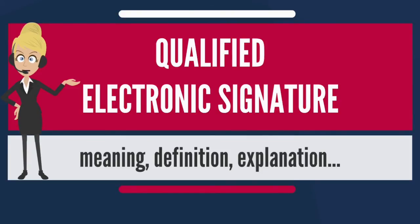Qualified Trust Service Providers are required to abide by the strict guidelines outlined under eIDAS, which include: as part of the certificate creation process, the service provider must provide a valid time and date for created certificates; signatures with expired certificates must be revoked immediately; personnel employed by the Qualified Trust Service Provider must be appropriately trained; and software and hardware used by the service provider must be trustworthy and capable of preventing certificate forgery.